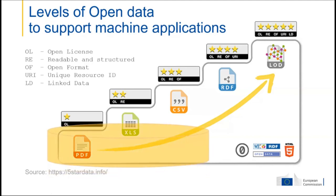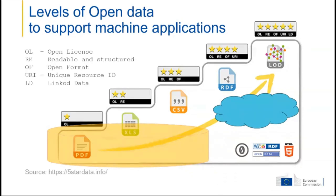These first three formats are usually stored in a database or file system. The fourth star is data open to the web using URIs — unique resource identifiers — so that we all know this is the unique identifier for this data. At the fifth star is the linked data approach — the crown jewel — where data is in the cloud and directly usable with tools like ChatGPT or any other AI approaches. That's the holy grail of where we want to go.